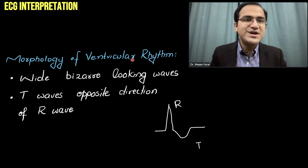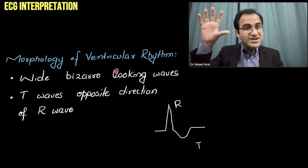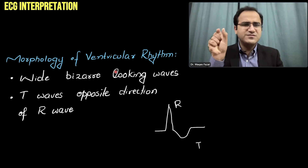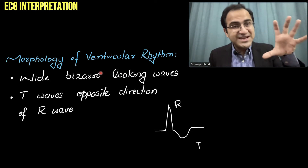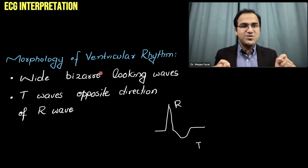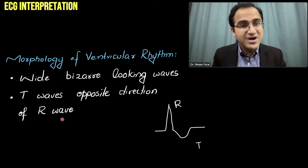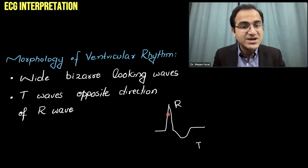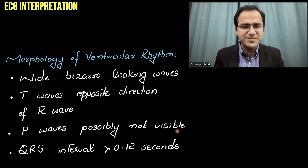The morphology of ventricular rhythms is wide, bizarre-looking waves. When the SA node depolarizes, it gives narrow, sharp QRS complexes. But when the ventricles take charge, they depolarize slowly, producing wide QRS complexes. The T wave is opposite in direction to the R wave. A wide QRS complex greater than three small boxes on ECG with an inverted T wave is a classical feature of ventricular pacemaker activity.